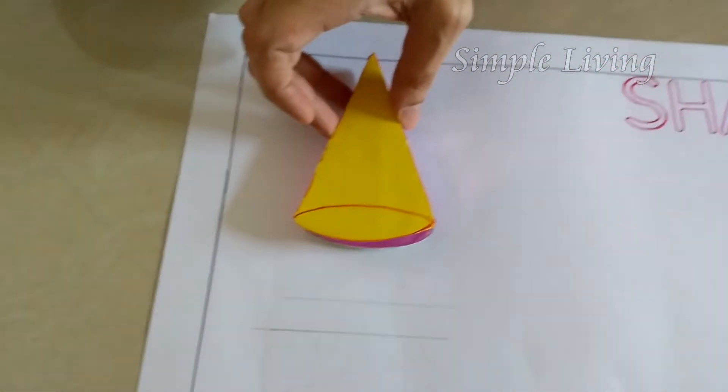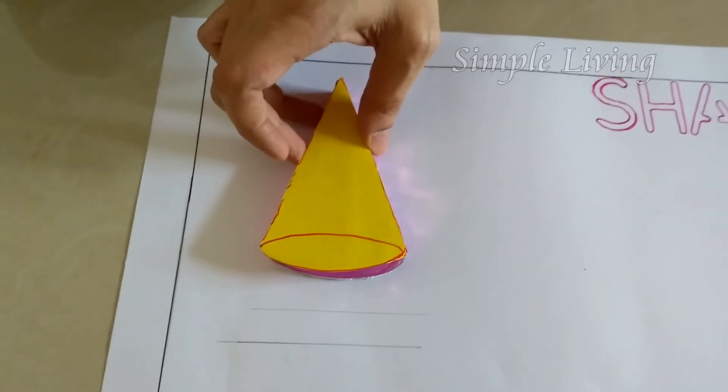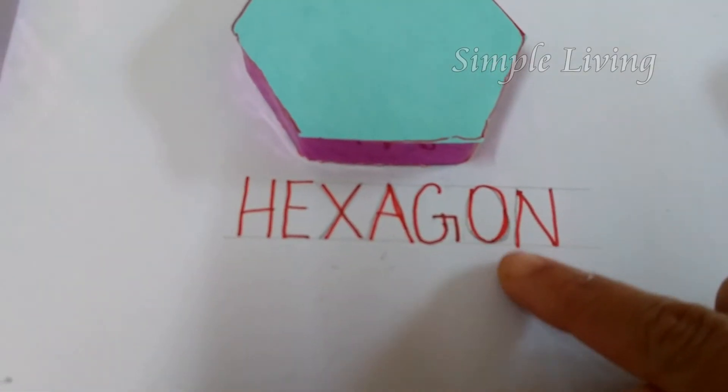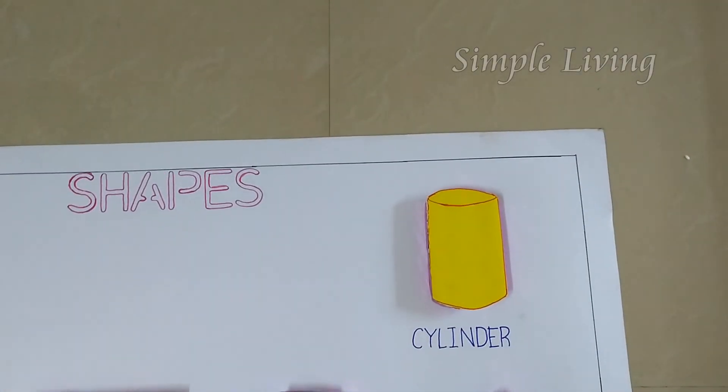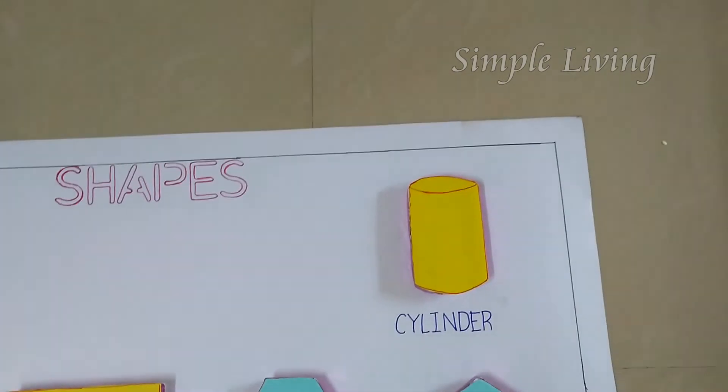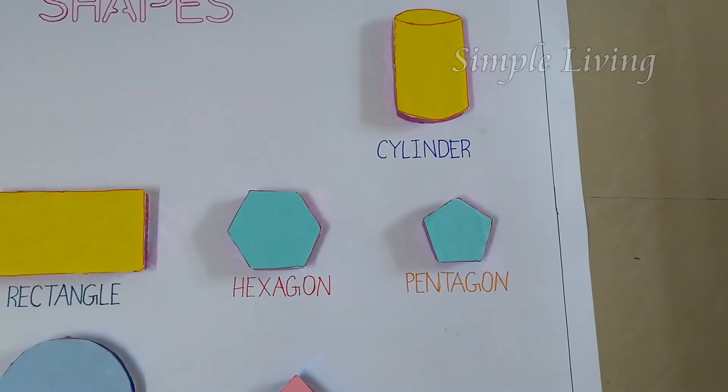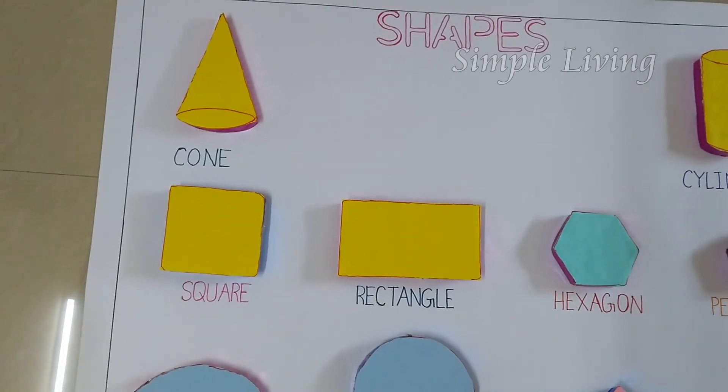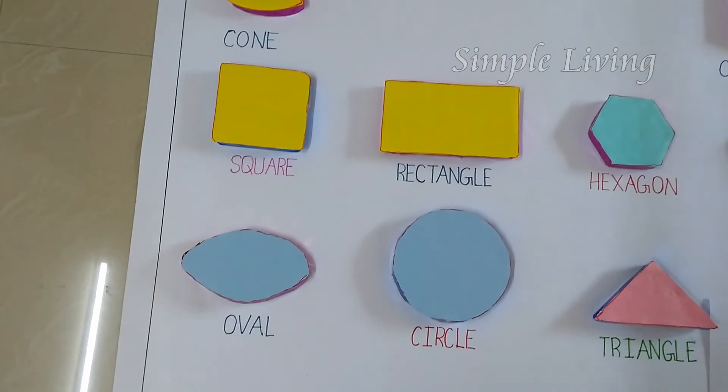Again making the cone shape. I will make it like this, and then I will do it. And I am going to do this. So this is the LKG model of shapes project.